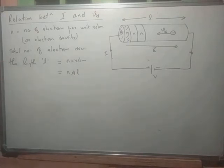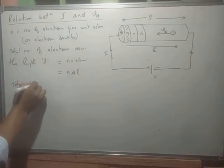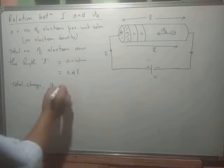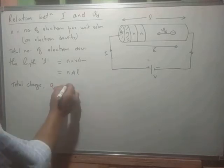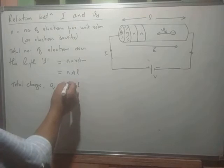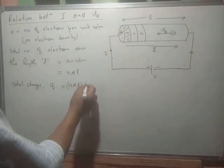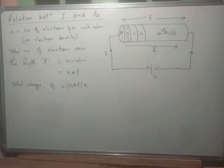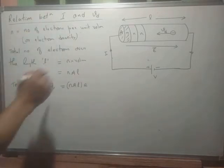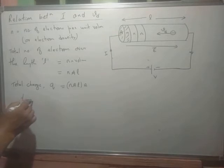Now that we know the total number of electrons, we can find the total charge Q inside the conductor. The total charge Q equals the total number of electrons (n × A × L) multiplied by the charge of each electron, which is e. So Q = n × A × L × e.